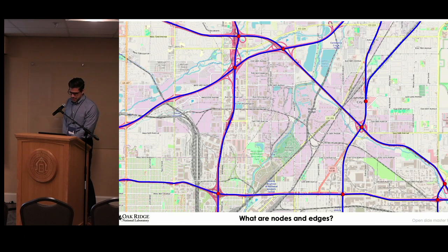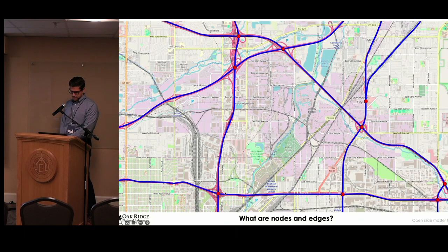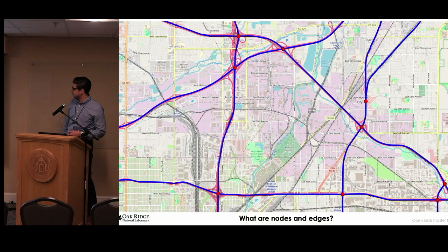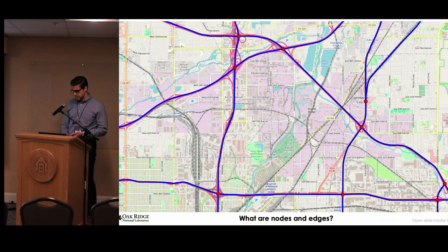Before getting into the nitty-gritty details, let me go over some basic nodes and edges. Edges are the blue lines on the graph — you can generally think of them as a road. Nodes are the points where those edges meet, and you can think of them as an intersection, a turn, or an interchange. Edges connect nodes between each other. In order to route on a network, an edge needs a source node and a target node. So if you're routing along a network, you're going from source to target, which becomes a new source to the new target, and so on until you reach your destination.